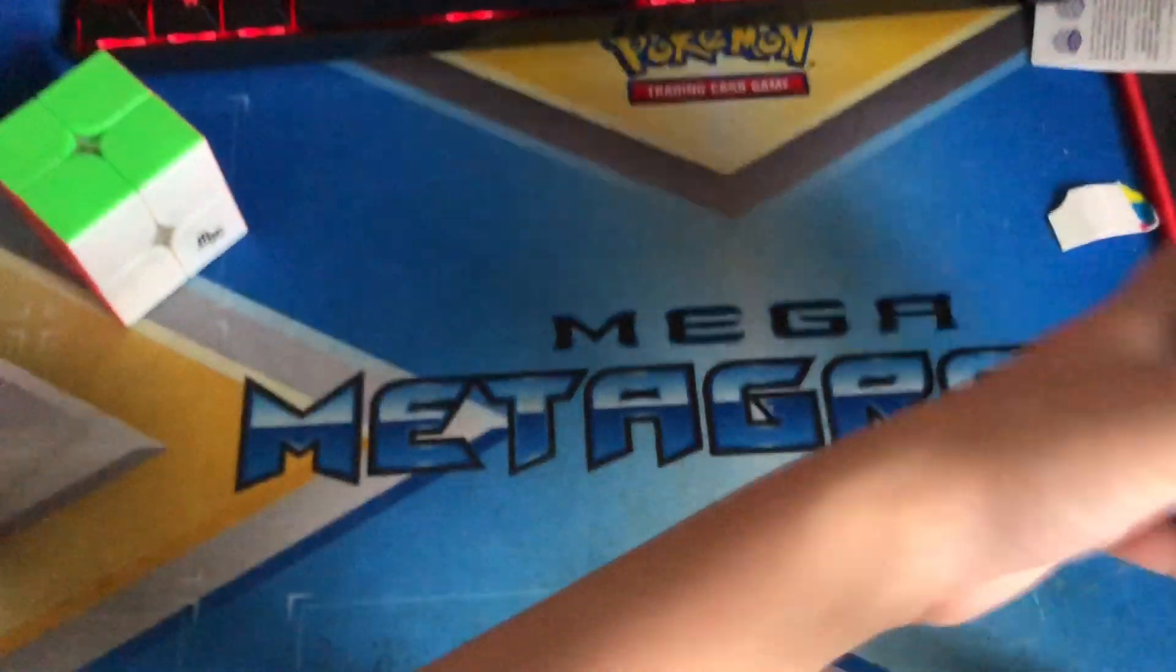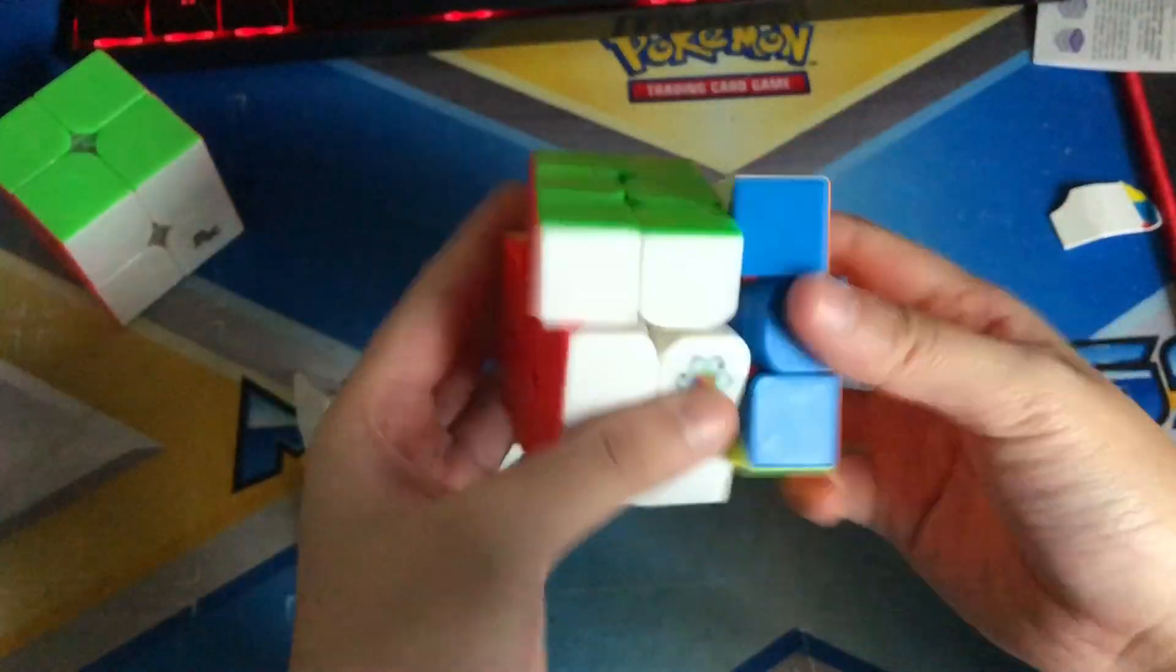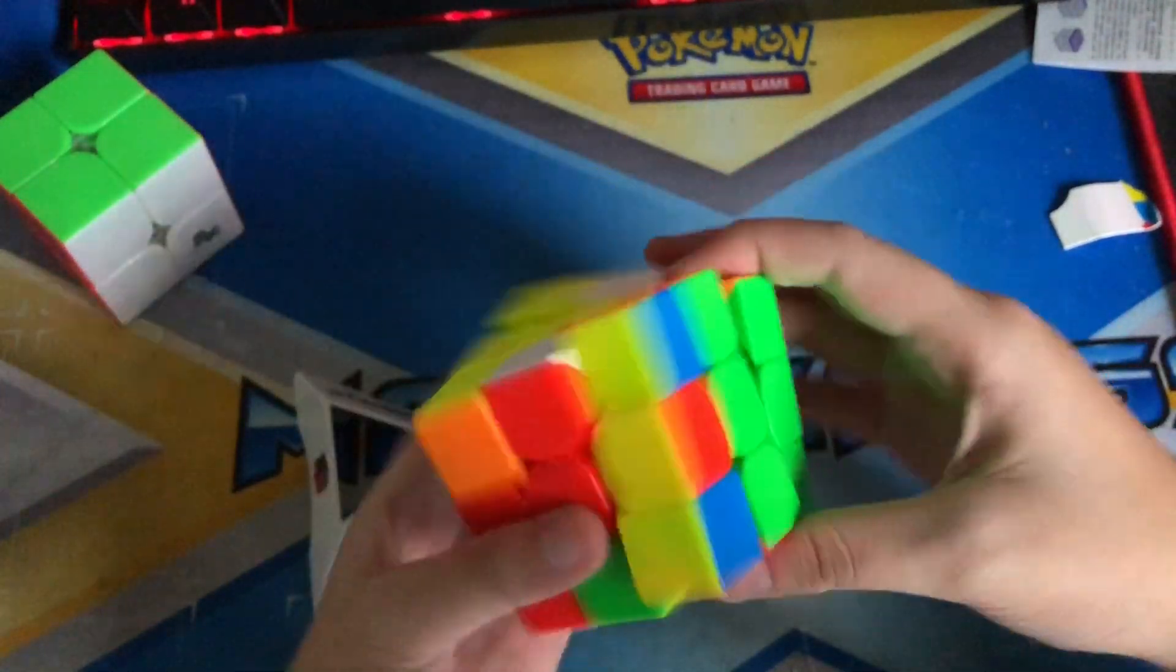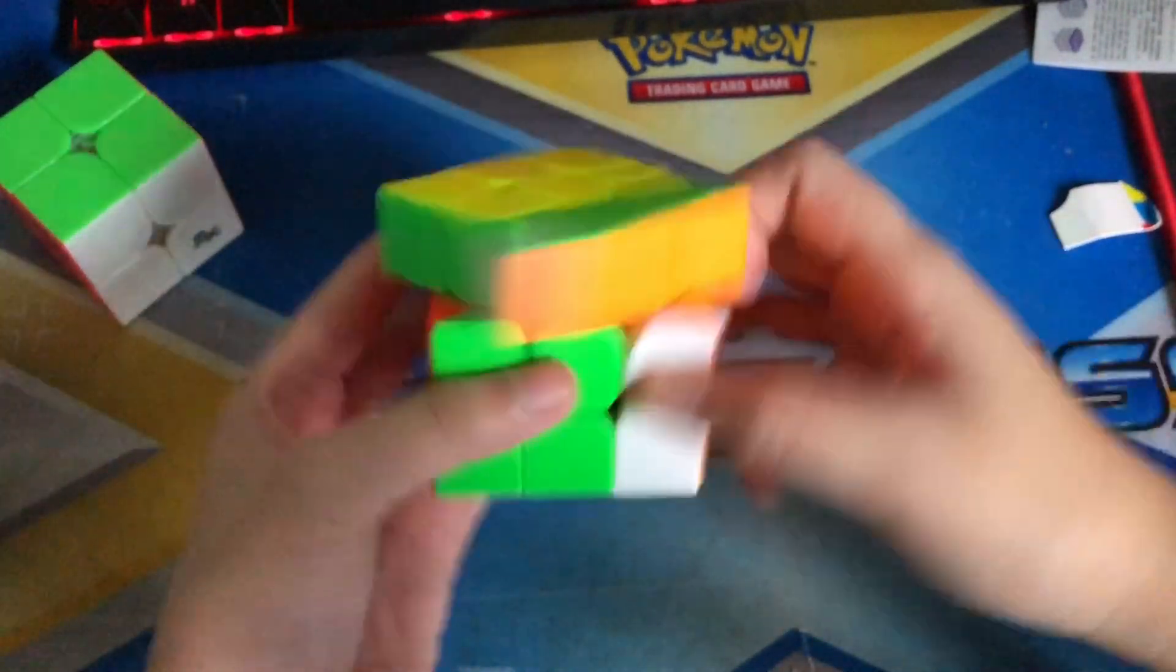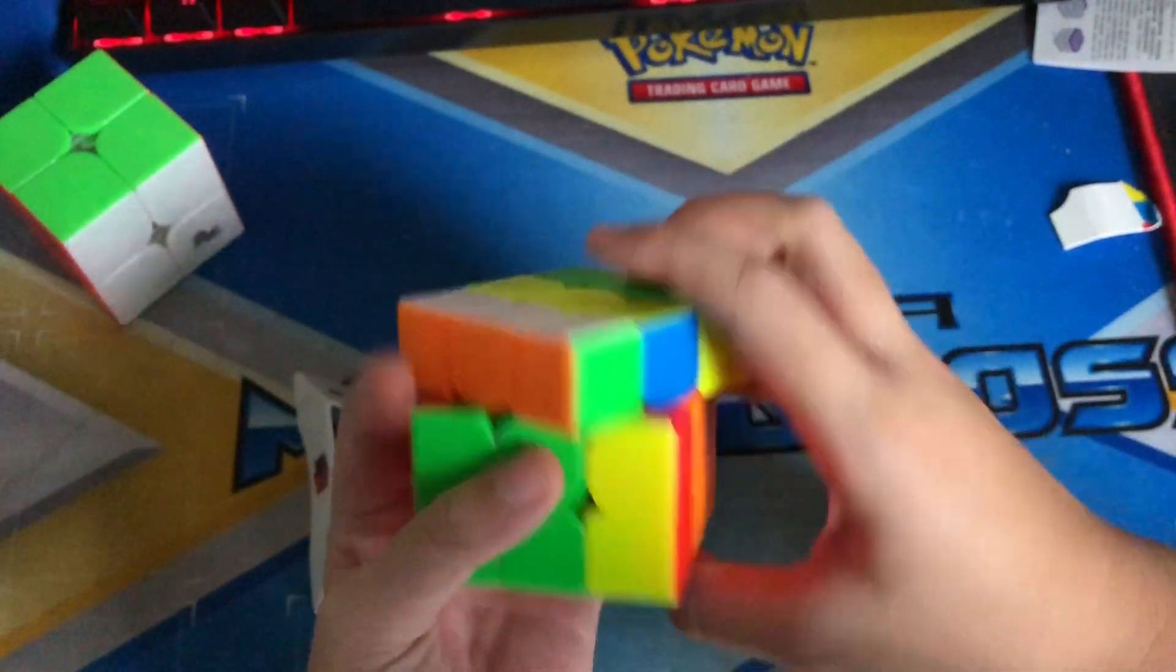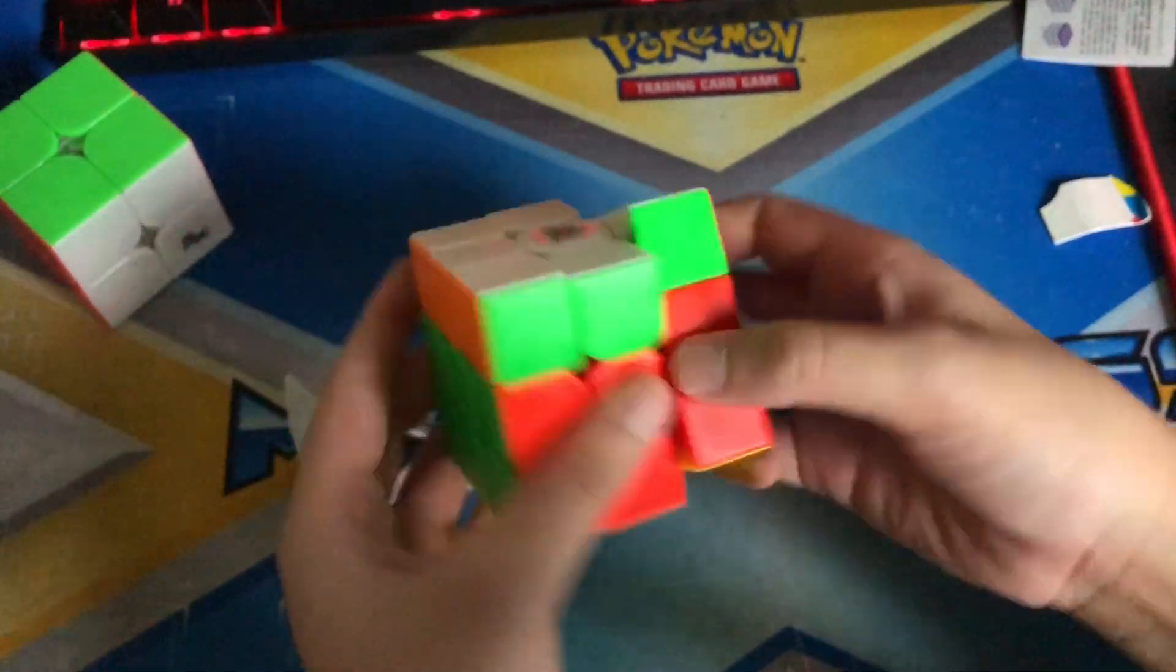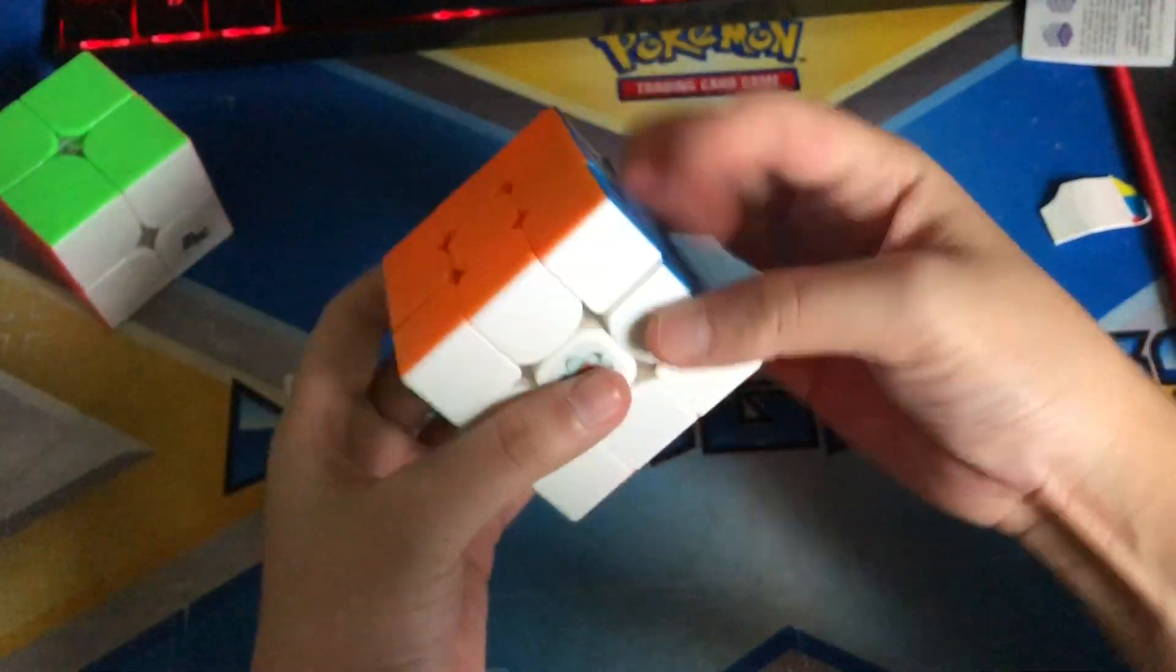Now let's get to the Cubicle Labs Angstrom. This is the Cubicle Premium Yuxin Little Magic M. First turns - this is so good. It's a bit gummy right now, but this will honestly be my main over the GTS2M. If this is not my main today, then it definitely could be my backup main. This is so good. I honestly can't stop turning it. The blue side's a bit tight but this is kind of loose.